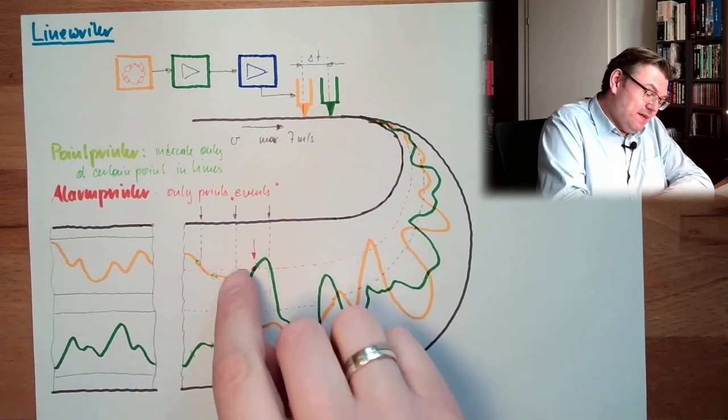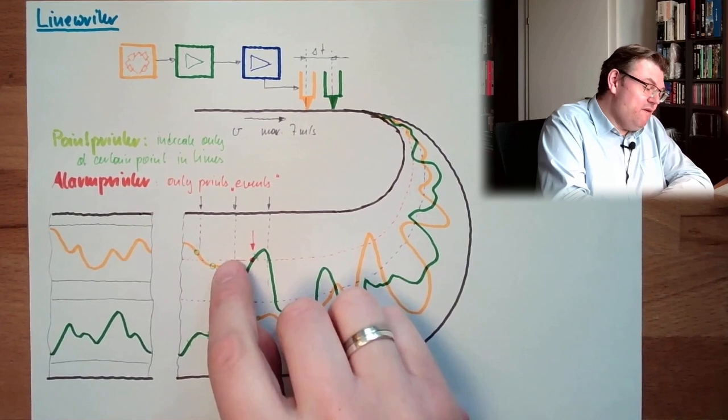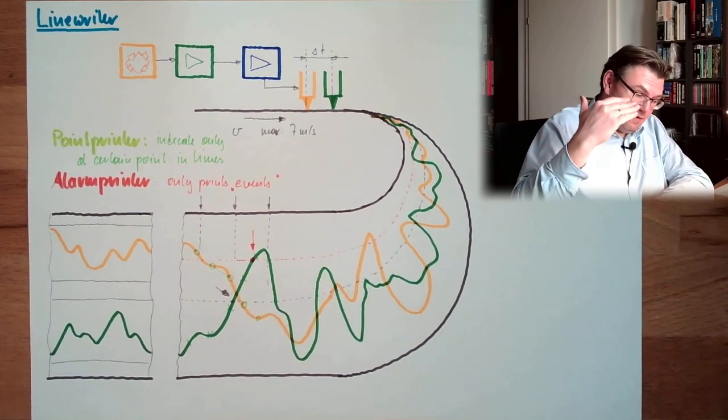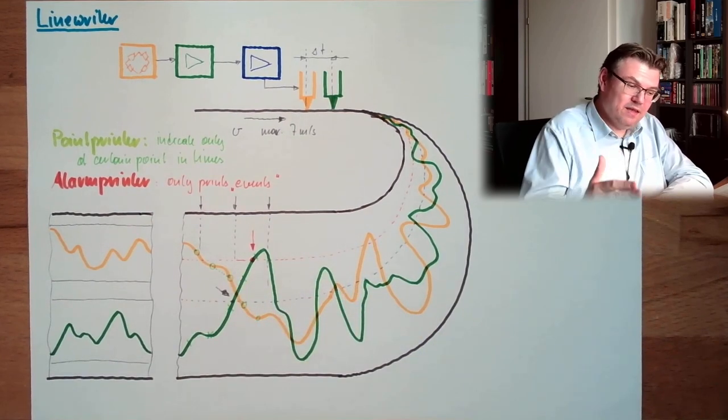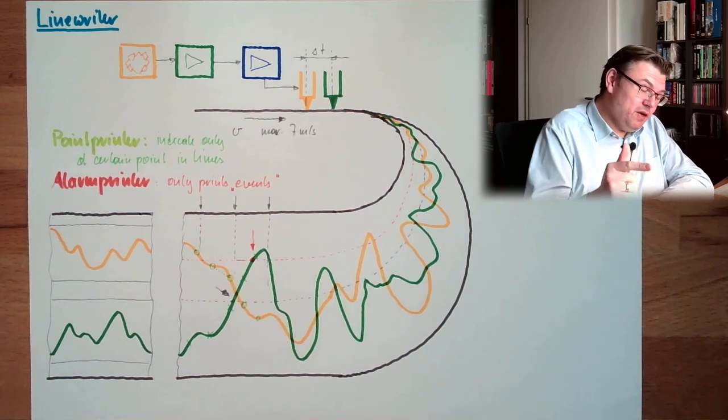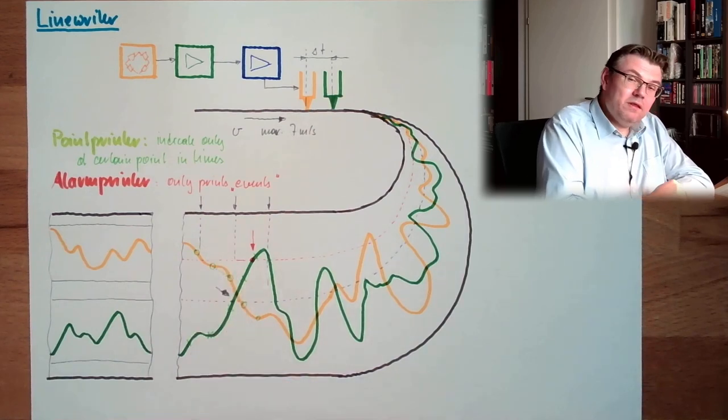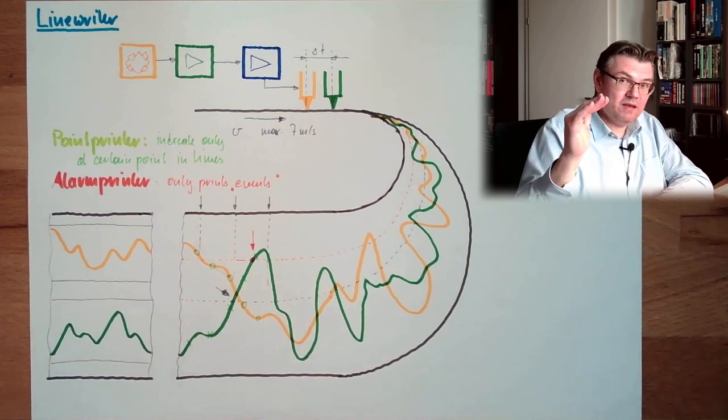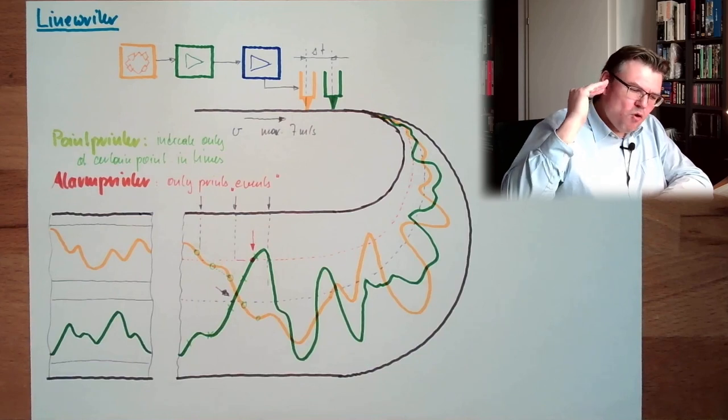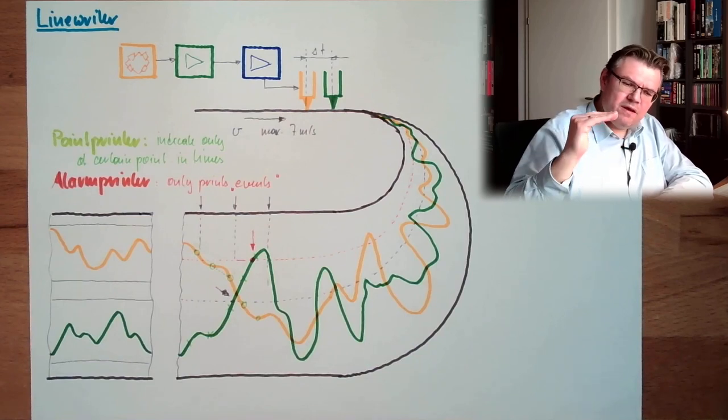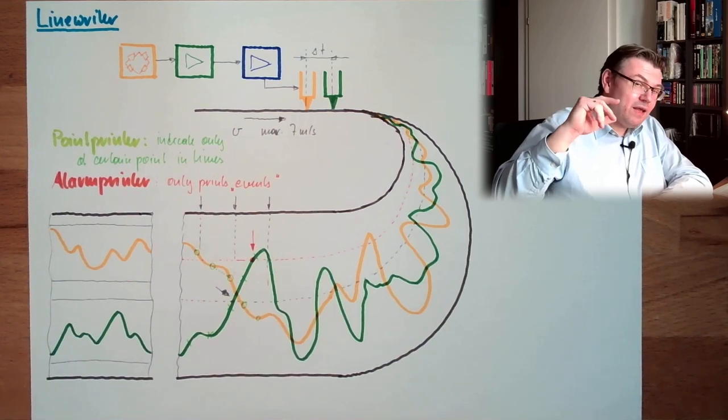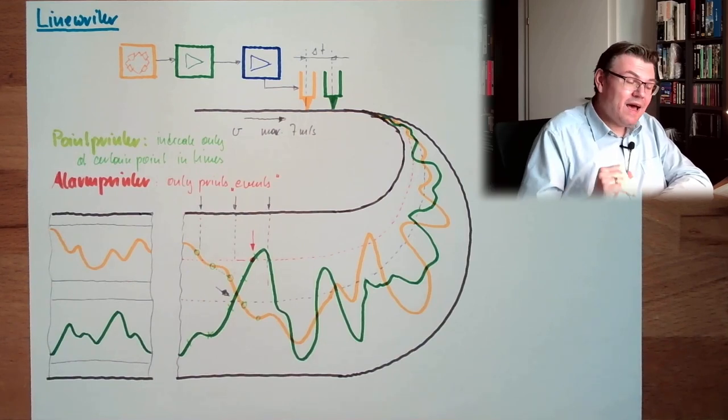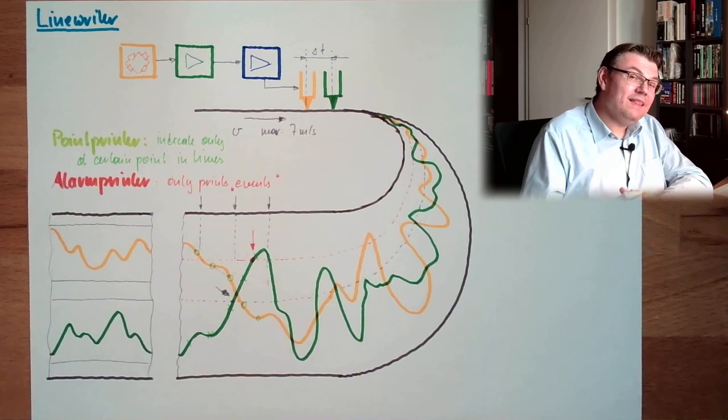But why I have told you this? Because I wanted you to understand the difference between a point printer and a line writer. Because like I said, we have a difference here. And if we are storing values in the database, it works pretty much like the point printer, the point writer. Because I only have one entry at a time. I do not have a line. I do not have the full recording. I only have an entry at certain points in time. And what happened between those entries I cannot really tell.